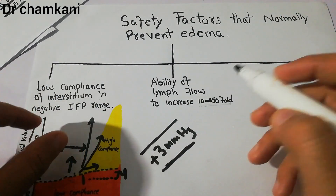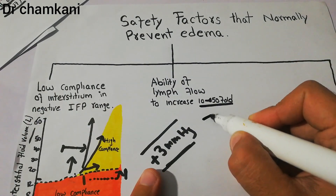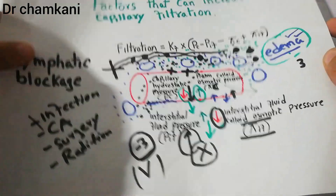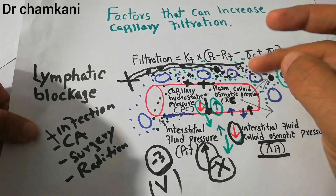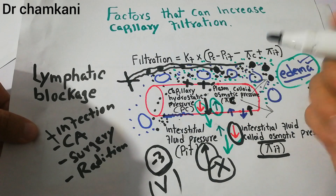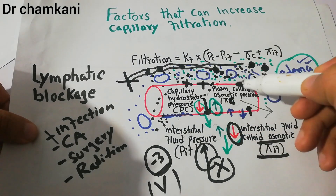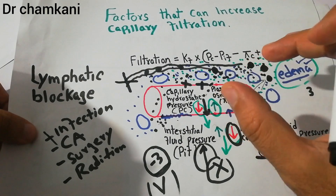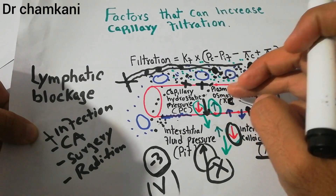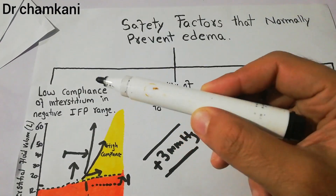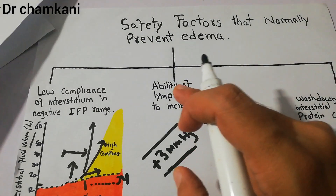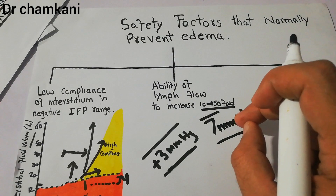The ability of lymph flow to increase 10 to 50 fold can prevent a further increase of 7 mmHg in any of these forces. Edema results when net filtration is increased, either due to increased capillary hydrostatic pressure or decreased plasma colloid osmotic pressure. Up to 3 mmHg increase is compensated by low compliance of interstitium, and a further 7 mmHg increase can be compensated by increased lymph flow.